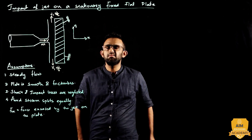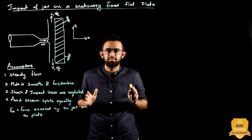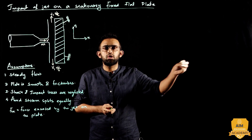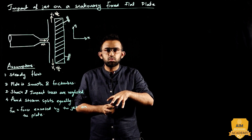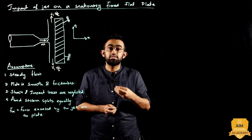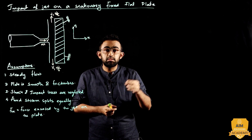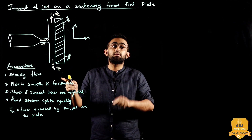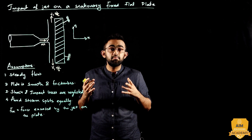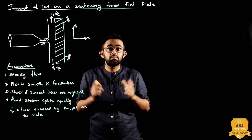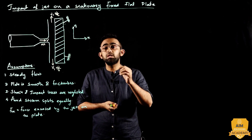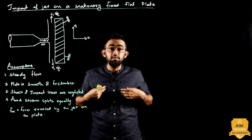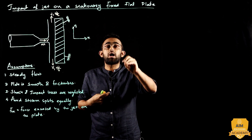For example, imagine a class with 80 students. I cannot focus on every individual student. Instead, I fix a boundary — the classroom — and observe that region. That is exactly what the control volume approach does: we fix a boundary and analyze what happens within that region rather than tracking every particle.